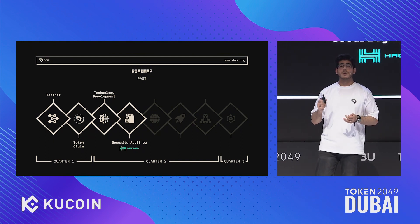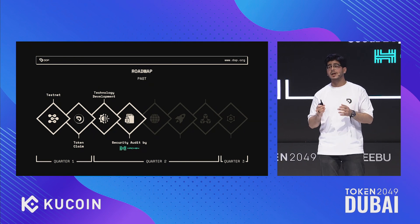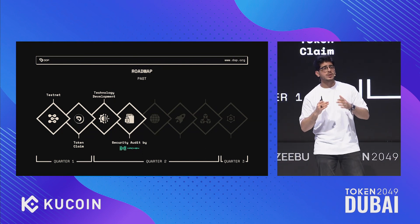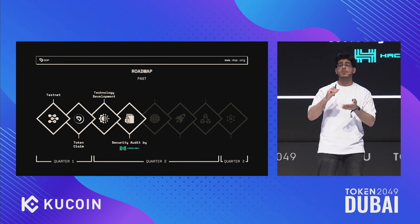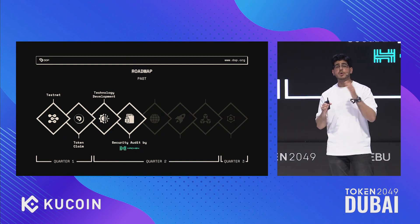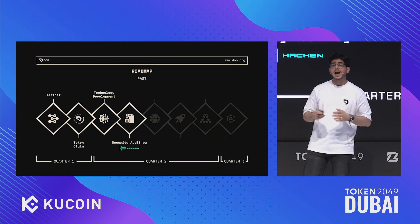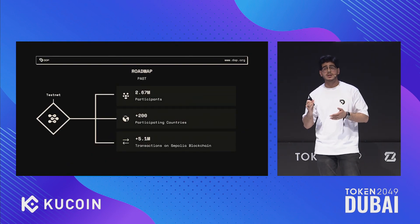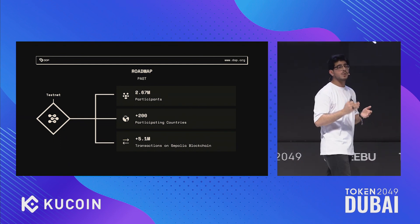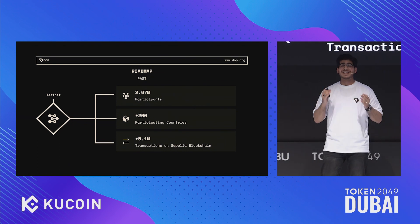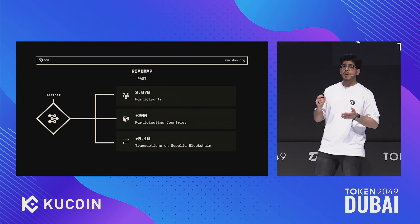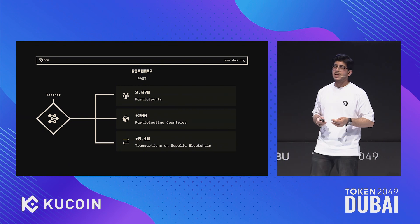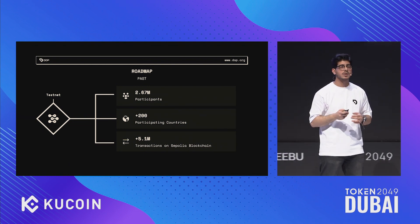We currently have more than 130,000 people who have already claimed, giving us 130,000 holders on the Ethereum public blockchain, making us one of the biggest communities on the Ethereum public blockchain. We also wanted to take feedback from the community on how they want the user experience to be. So we launched the testnet, and we are proud to announce that more than 2.6 million people joined our testnet from over 200 different countries, resulting in more than 5 million transactions on the Sepolia blockchain of the Ethereum network.